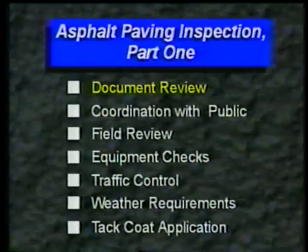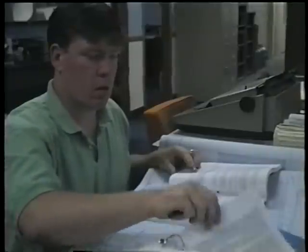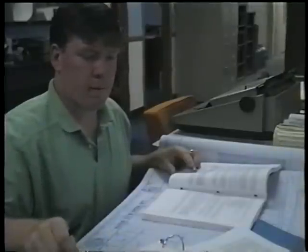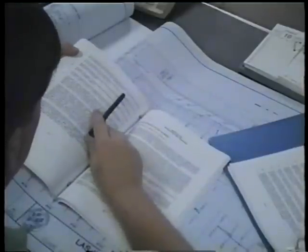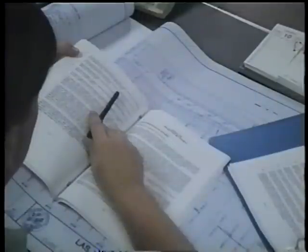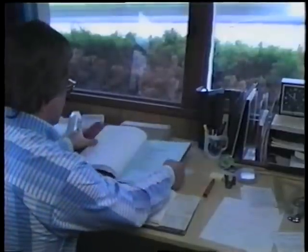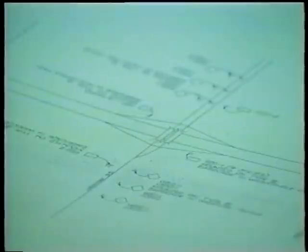Document review. First, as with any project, review the contract documents. This includes your agency's bid specifications including amendments, any special provisions, the appropriate sections of the construction manual, and the traffic control plan. Paving details can vary significantly from one job to the next, especially for traffic control. The traffic control plan identifies the types of signs and devices necessary, as well as their placement, so always study it carefully.